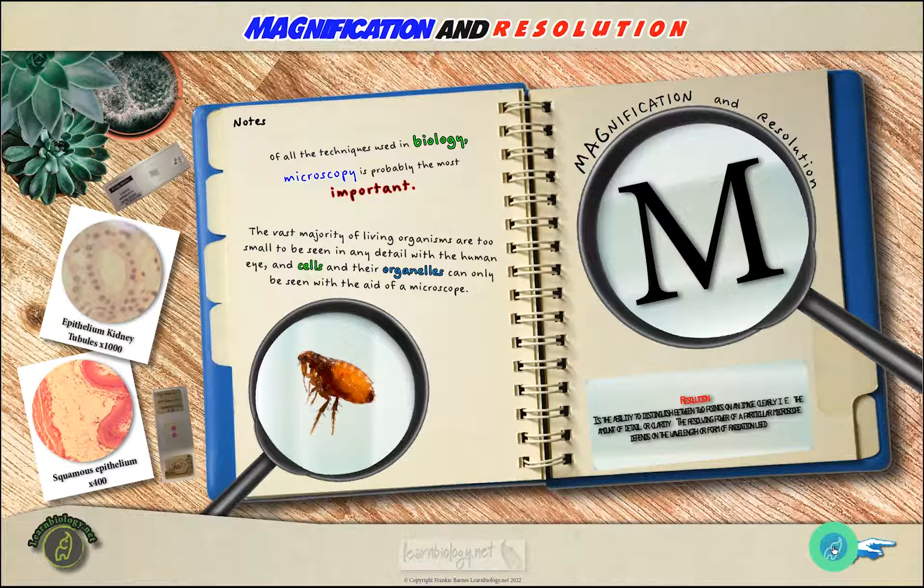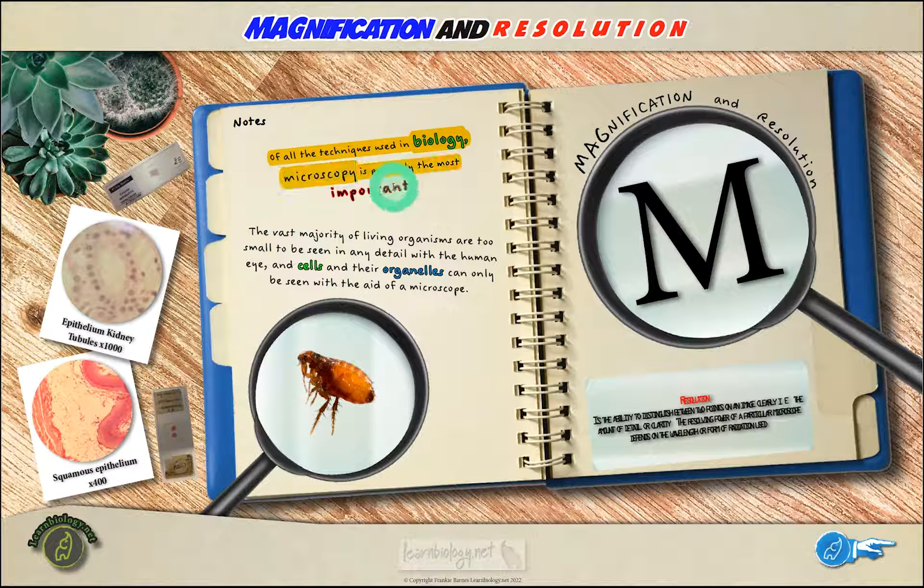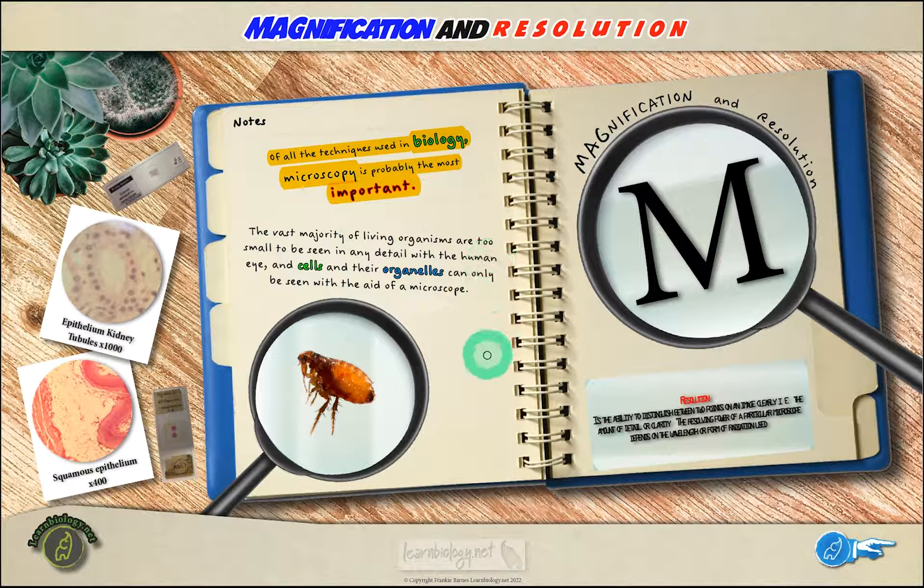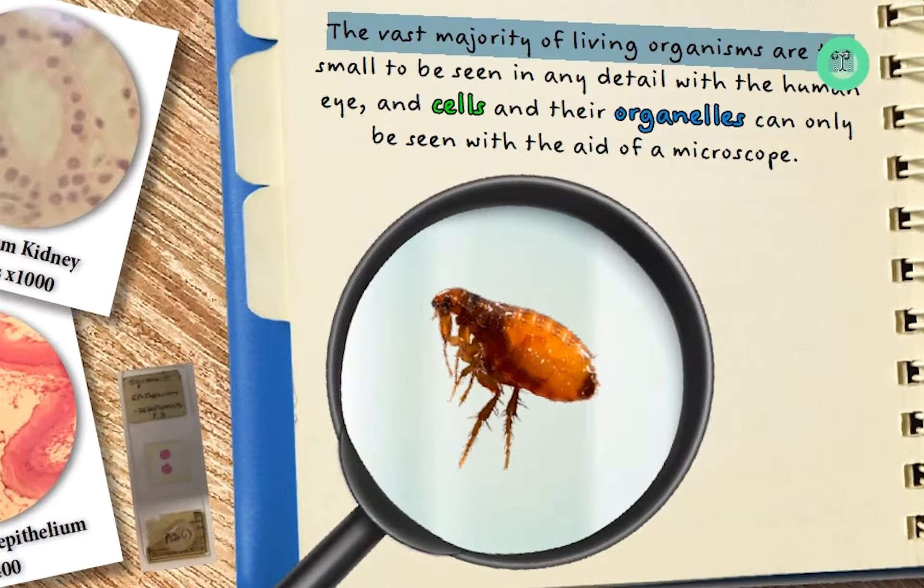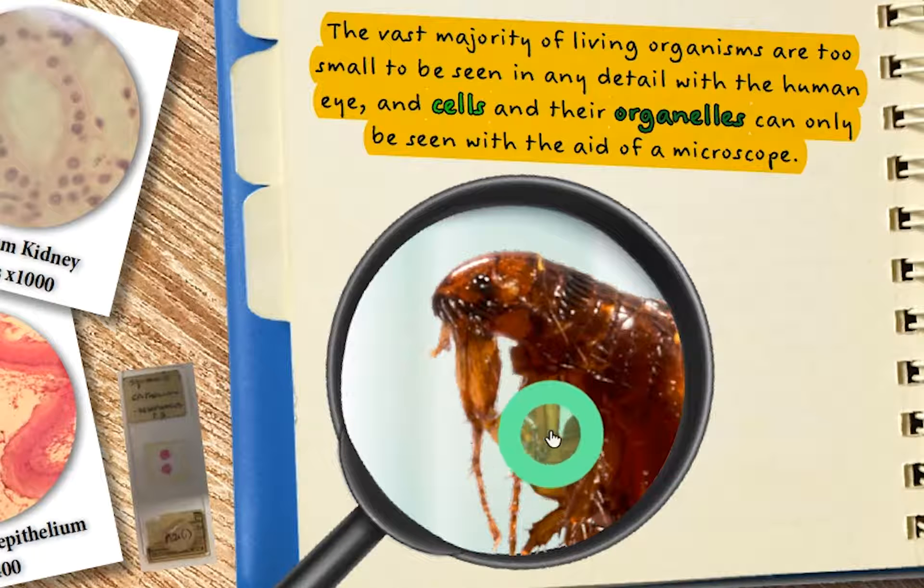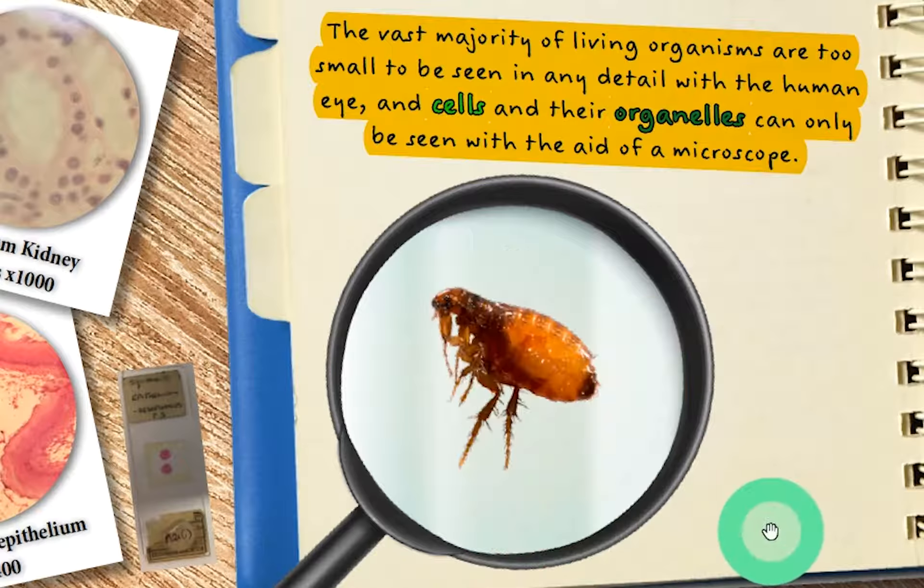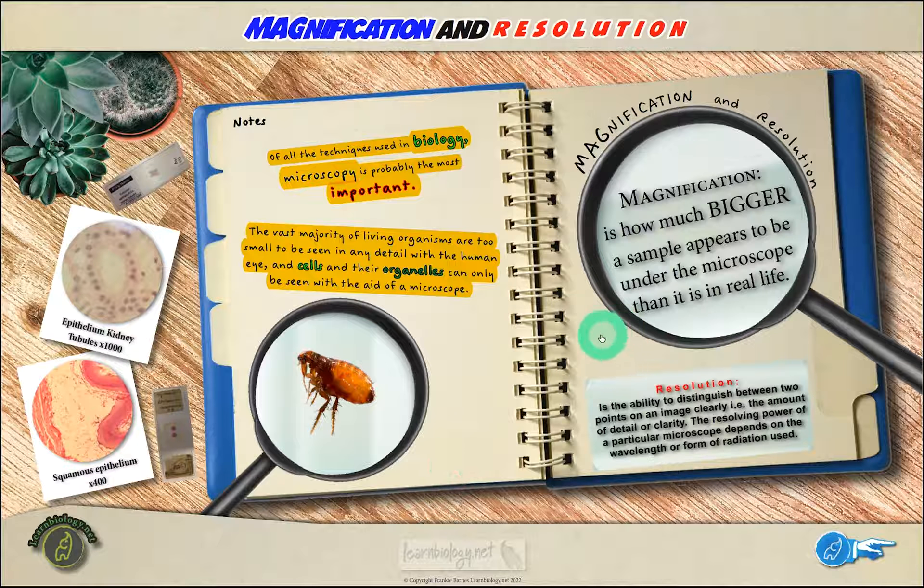Why do you need to know any of this? Well, microscopy is really important for biologists since, as you know, all living things are made up of cells, and these basic building blocks of life are pretty tiny. In fact, the vast majority of living organisms are too small to be seen in any detail with the human eye, and their cells and their organelles of course can only be seen with the aid of a microscope. So how do you know then how big a cell is when you zoom into it under a microscope? You're going to use something called the I am triangle, but before we discuss how to use the I am triangle, let's make sure you know the difference between a couple of important terms. Those terms are magnification and resolution.